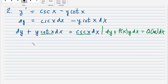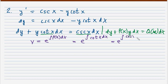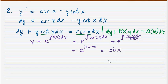We solve for the integrating factor: μ equals e raised to the integral of cotangent x dx. Since cotangent x equals cosine x over sine x, the integral becomes the integral of cosine x dx over sine x. Applying the logarithm formula, this equals ln(sin x), so the integrating factor is e raised to ln(sin x), which equals sine x.